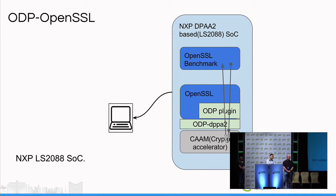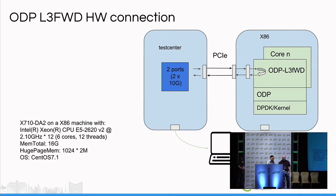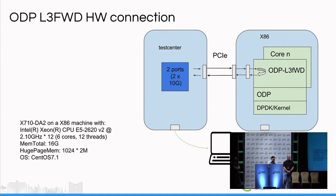A question about the L3 forwarding results: what's the difference between the different kernel and ODP-DPDK configurations? Forwarding in kernel space is a feature of the kernel. ODP-DPDK is a user space L3 forwarder where the driver is in user space, provided by DPDK. The different configurations shown represent kernel L3 forwarding versus ODP-DPDK user space forwarding with different core counts.